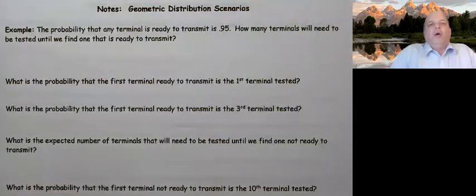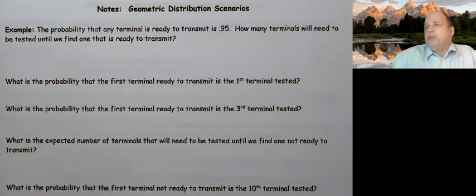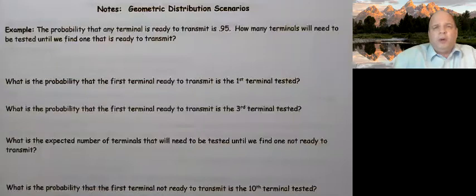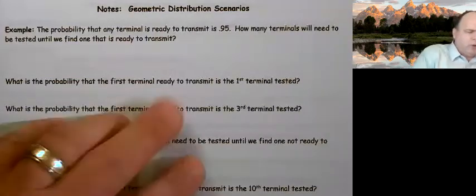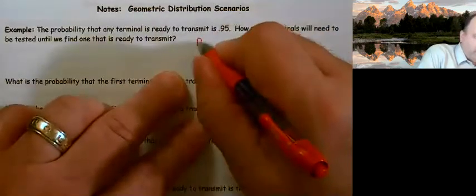Okay, so geometric distribution — these are scenario problems, here are some examples. The probability that any terminal is ready to transmit is 0.95, so we know right away that our probability is 0.95.